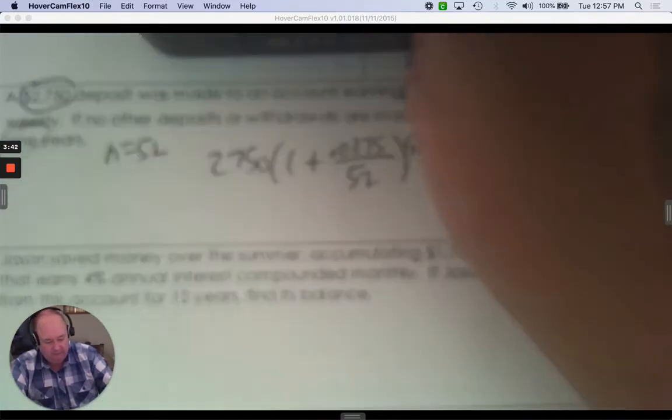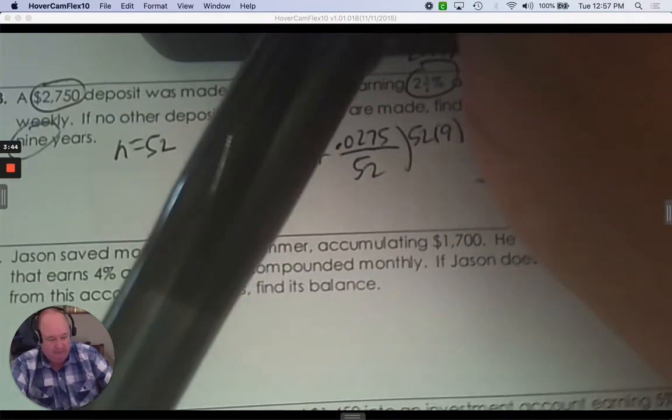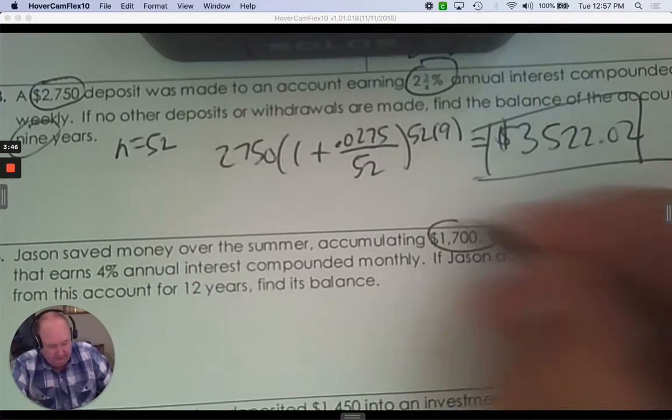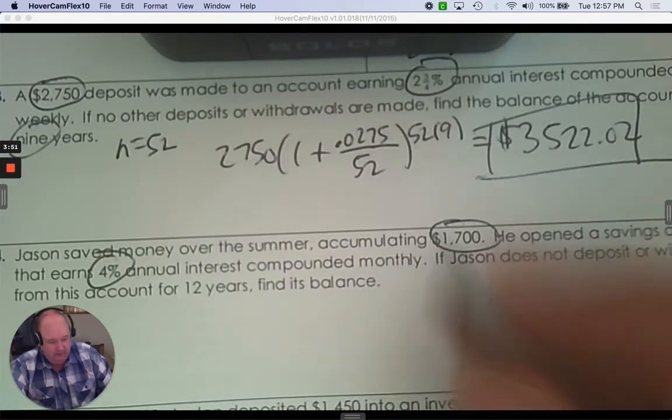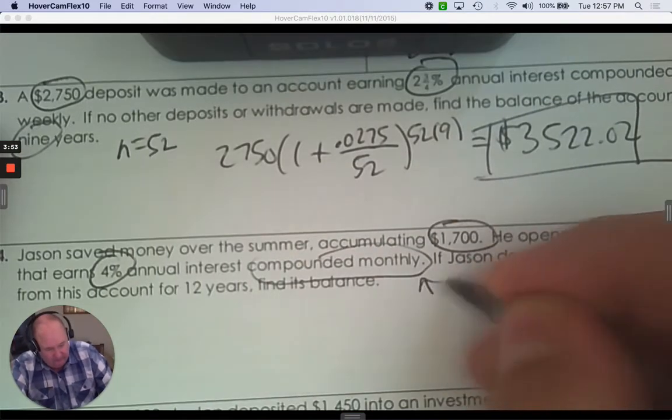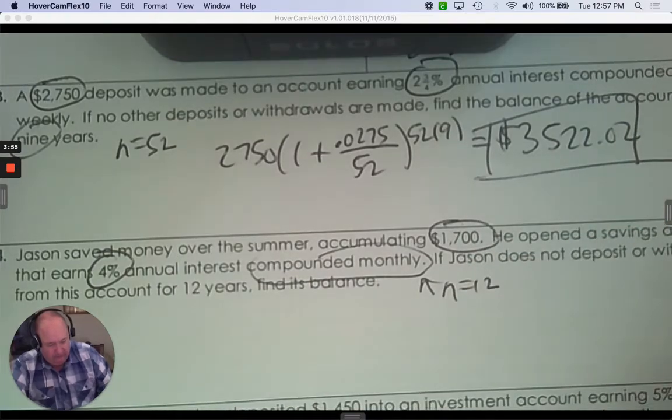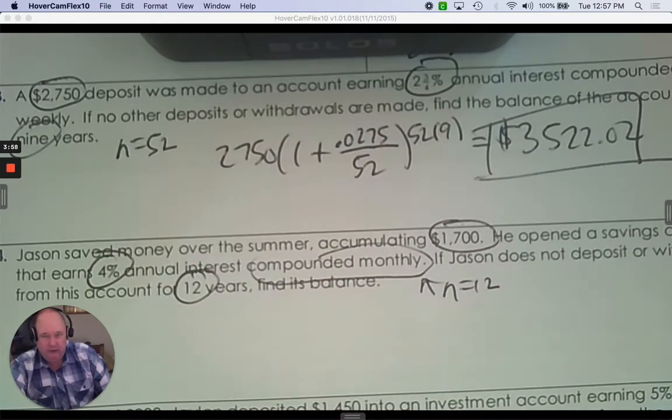Number four. Jason saved money and accumulated $1,700. He's going to put it in an account that earns 4% compounded monthly, which means there's 12 months in a year. And then how much will be in there after 12 years.